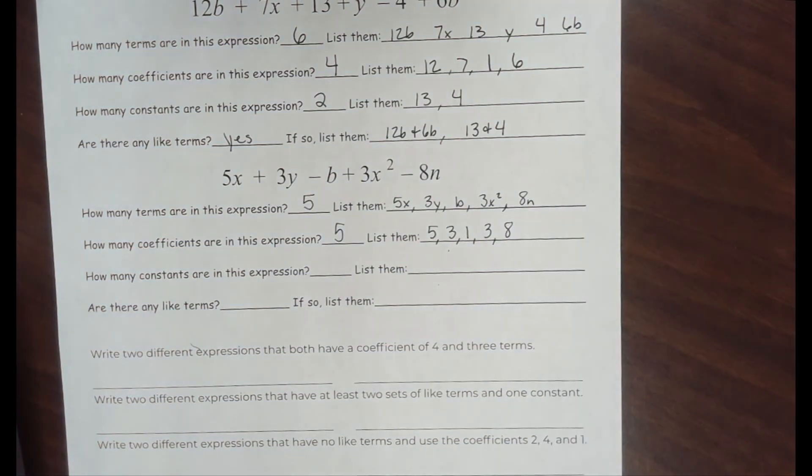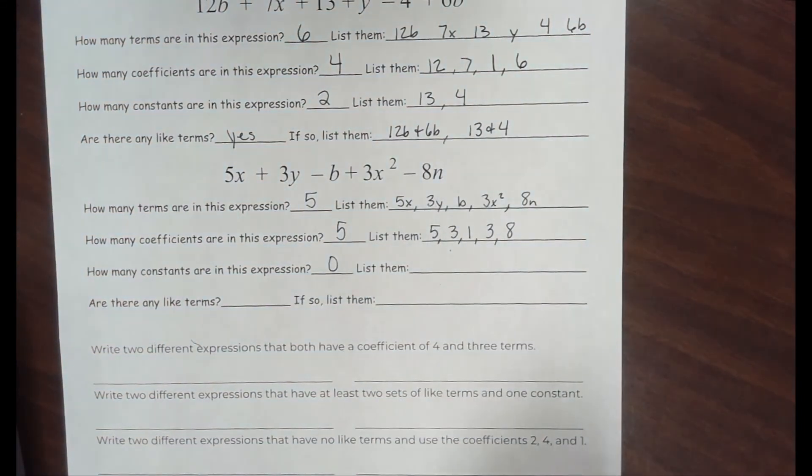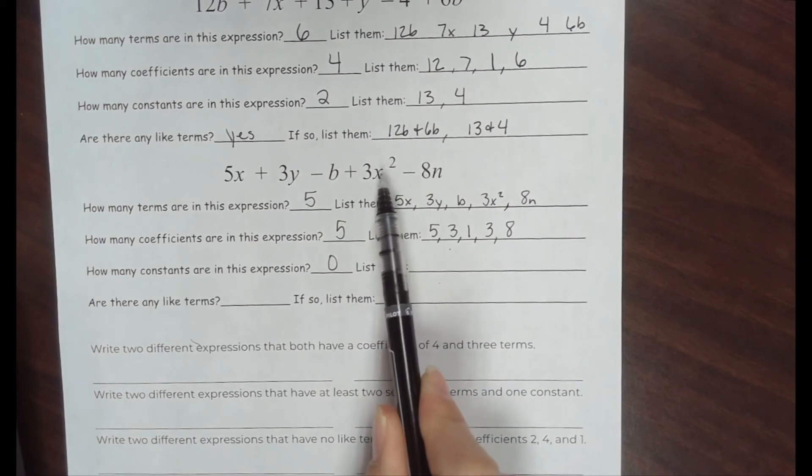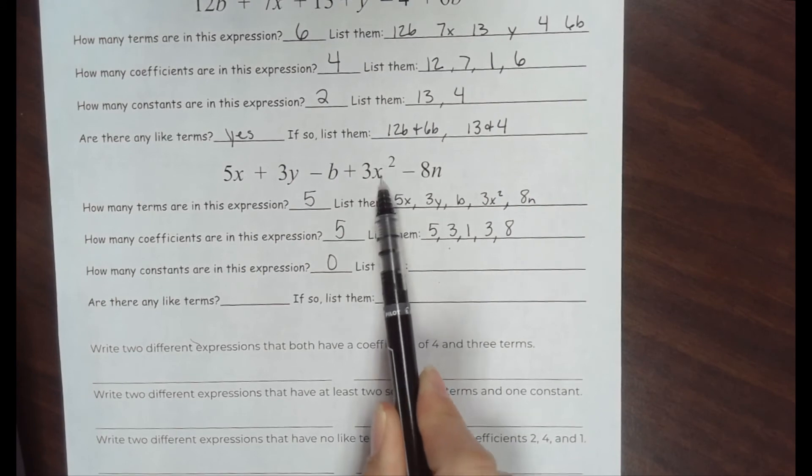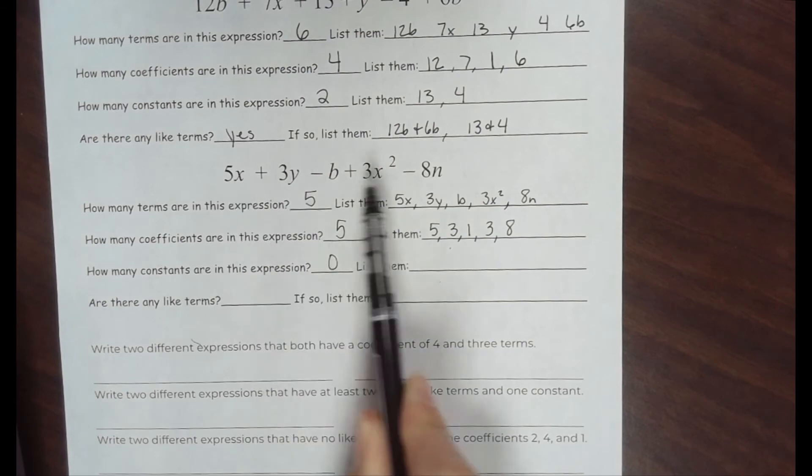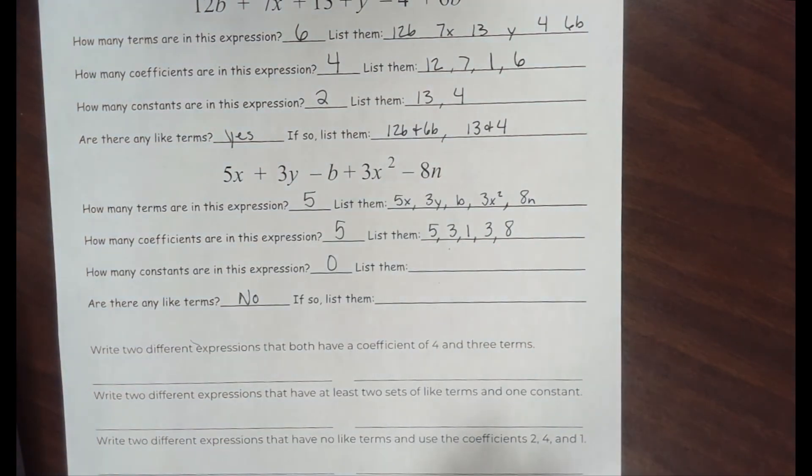How many constants are in this expression? Constants have no variable on them. So in this case, there are none, 0. Are there any like terms? We're looking for things that share the same exact variable. I have x and x squared, but I want you to realize that's different. x squared means x times x. This is just x. So would it be the same to put x's and x times x's together? There are not any like terms. None of these can be put together.